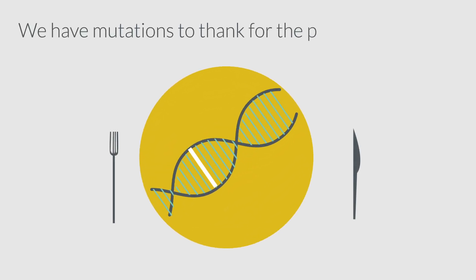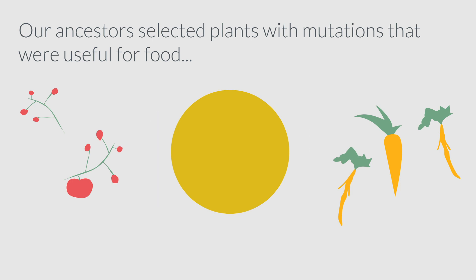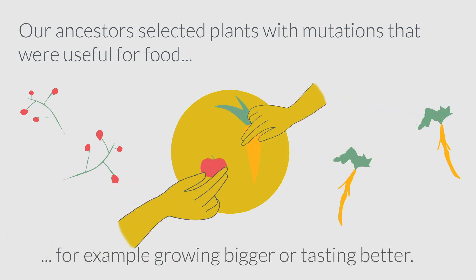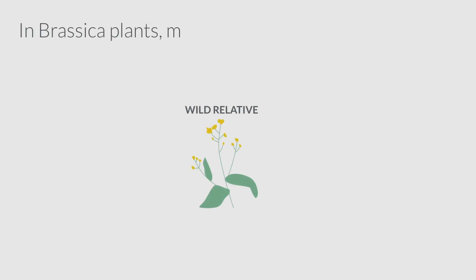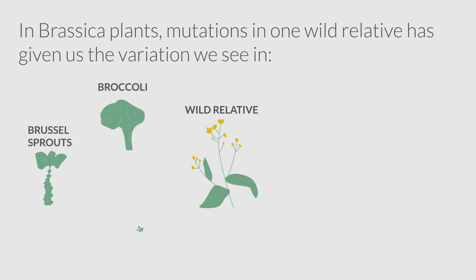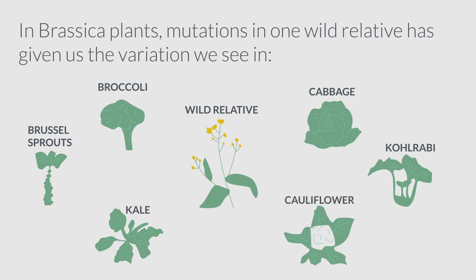We have mutations to thank for the plants we use. Our ancestors selected plants with mutations that were useful for food, for example growing bigger or tasting better. In brassica plants, mutations in one wild relative have given us the variation we see in broccoli, Brussels sprouts, kale, cabbage, kohlrabi, and cauliflower.